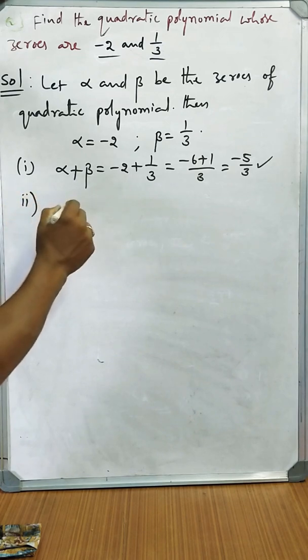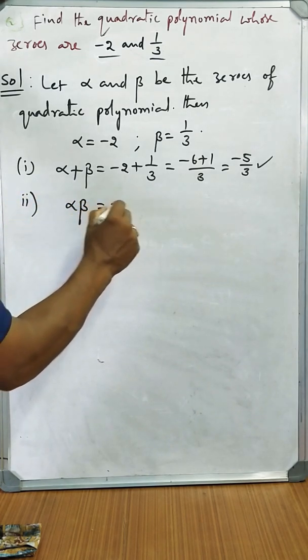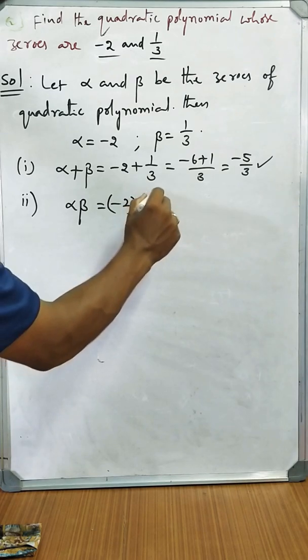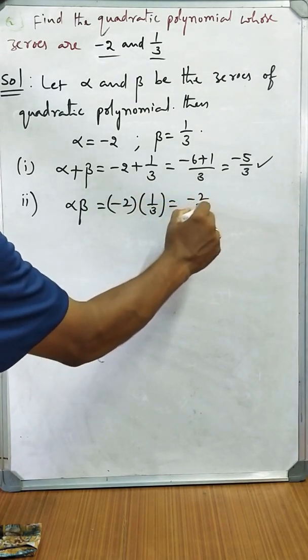Thereafter we should find the product of the zeros. That is -2 into 1/3, which equals -2/3.